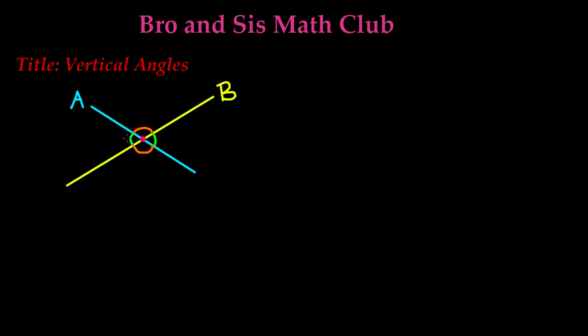These two angles, let's say they are called angle 1 and angle 2. That means angle 1 and angle 2 are vertical angles.